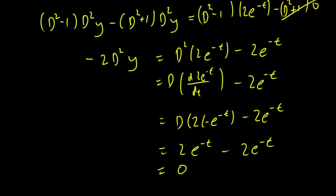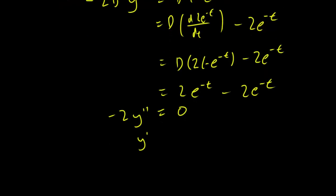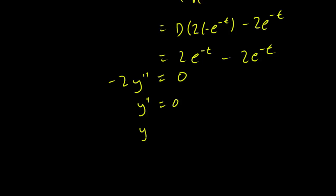All right, so our second equation is just going to be minus 2y double prime equals 0, which means that y double prime equals 0. And this means that y equals c1*t plus c2.